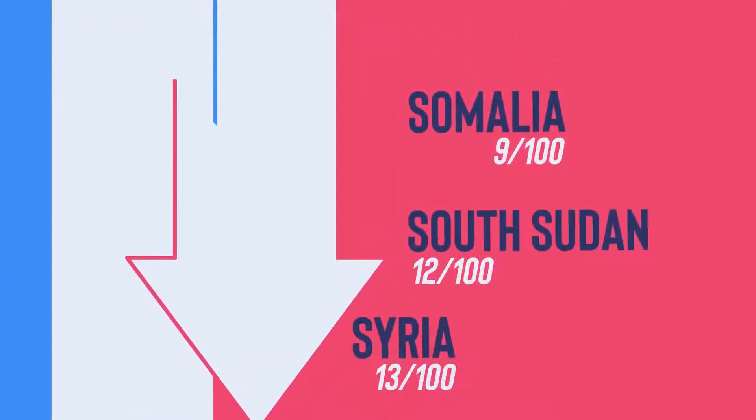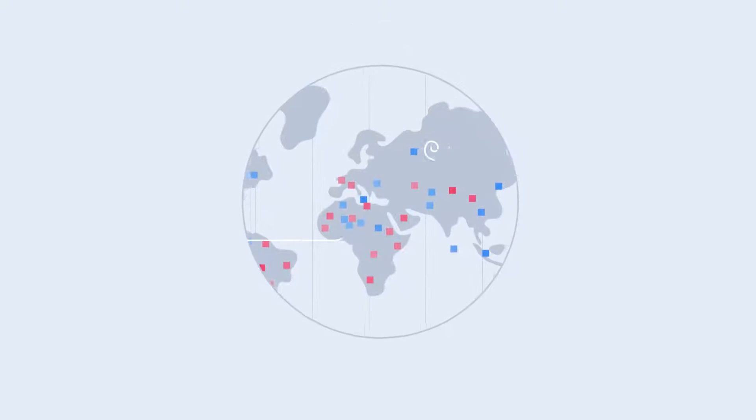The bottom countries are Somalia, South Sudan and Syria. However, when it comes to improving on corruption, the majority of countries are stagnating.